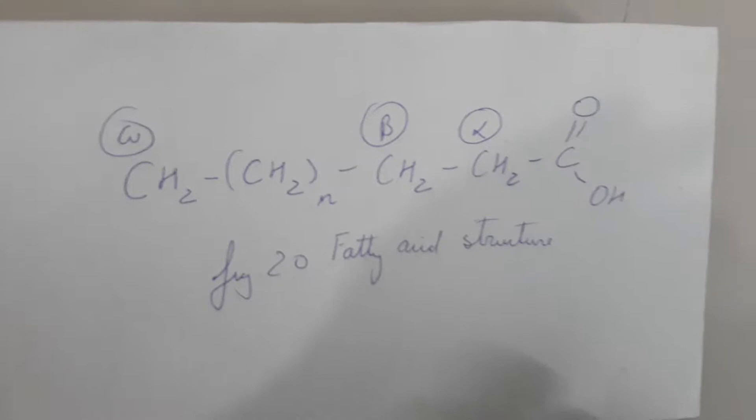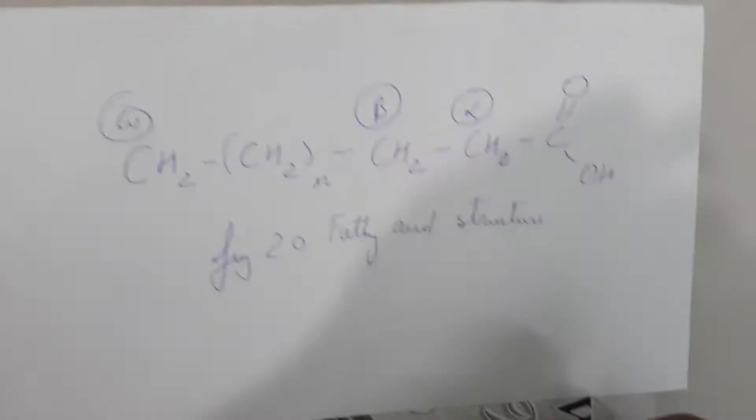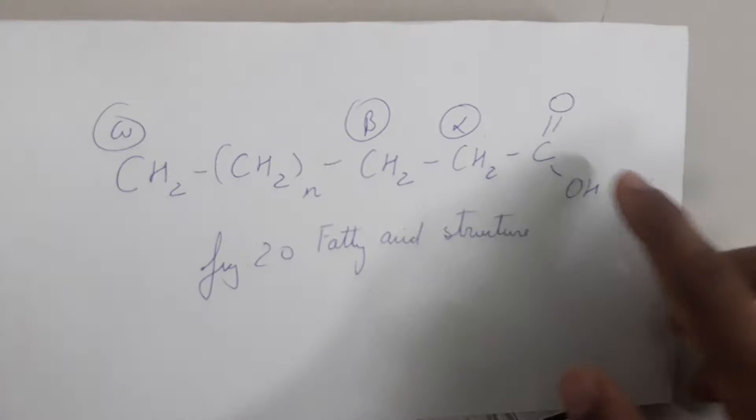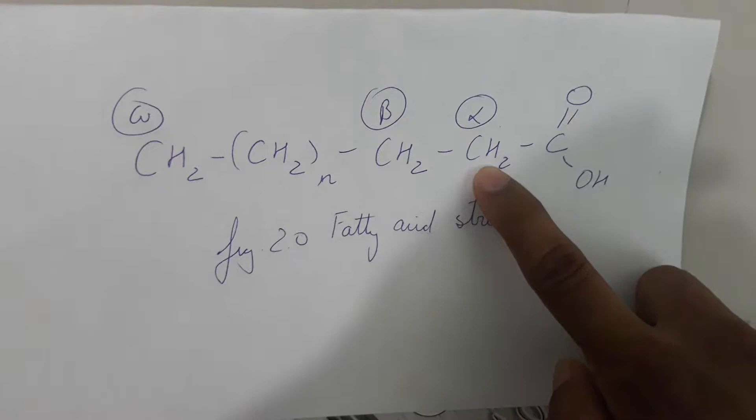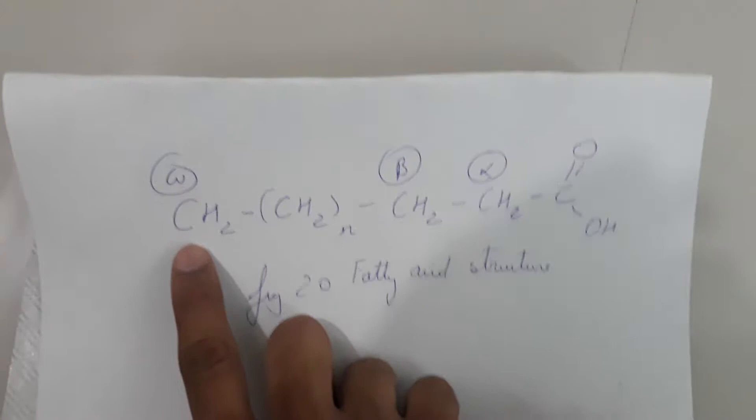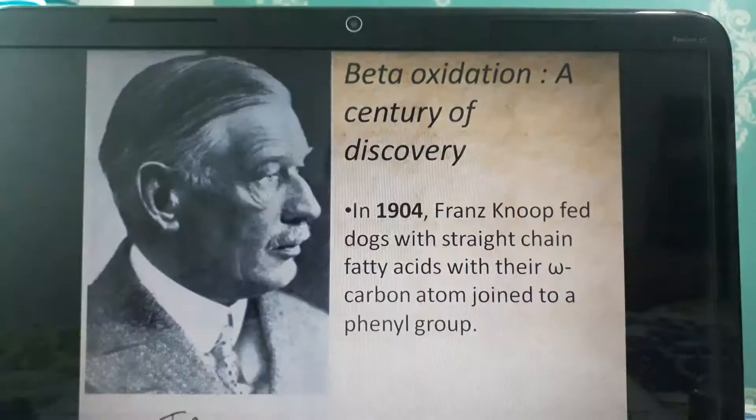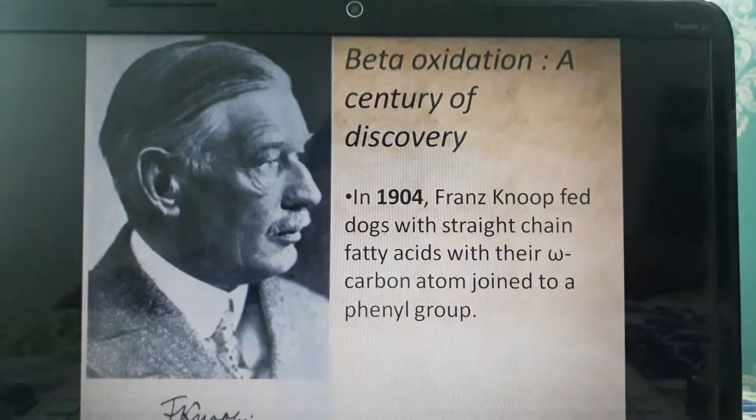Hello guys, today we are going to talk about fatty acid oxidation, or beta oxidation, which was discovered by Franz Knoop in 1904. Before going into that experiment, we should first see what is the basic structure of a fatty acid. A fatty acid consists of a carboxylic group; adjacent to it is the alpha carbon, adjacent to that is the beta carbon, and the last carbon is known as the omega carbon.